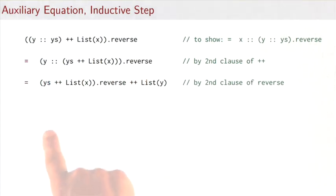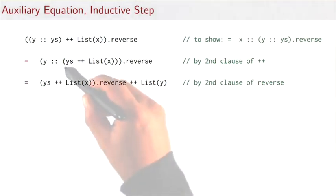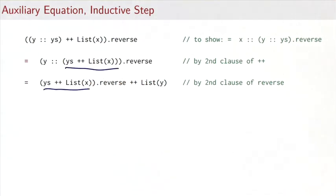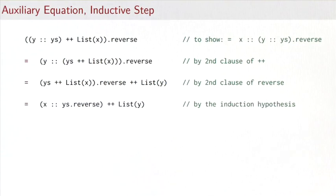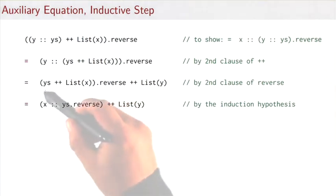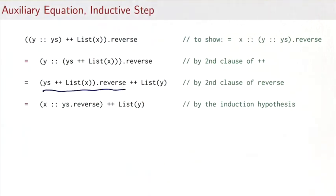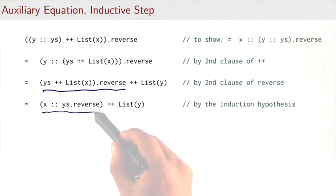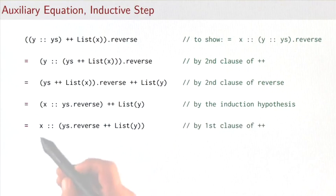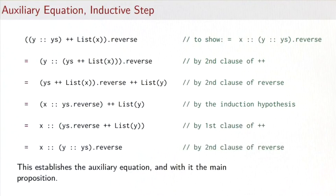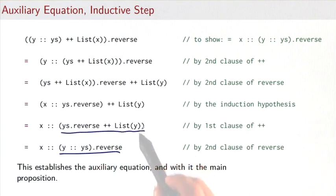Reverse of a list starting with y gives the reversal of the rest followed by y as the last element. We then apply the induction hypothesis: (ys followed by list of x).reverse rewrites to x followed by ys.reverse. Next, we apply the first clause of ++ to pull out x, and the second clause of reverse to show y followed by ys.reverse equals ys.reverse followed by list of y.